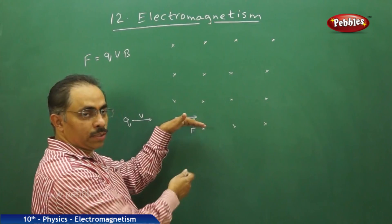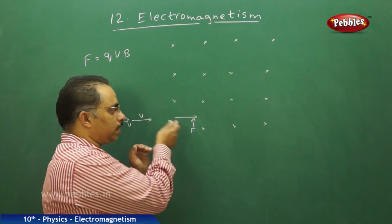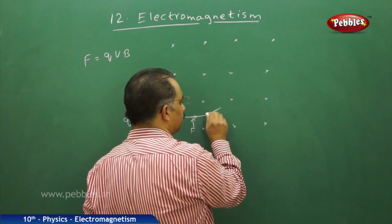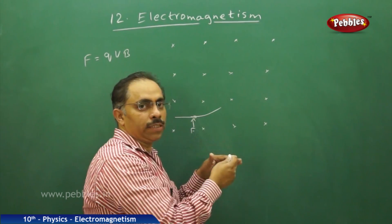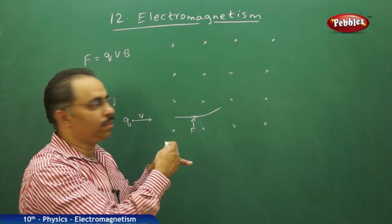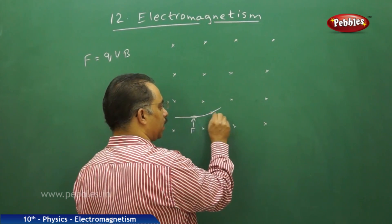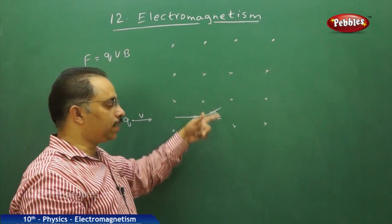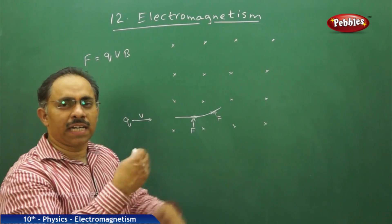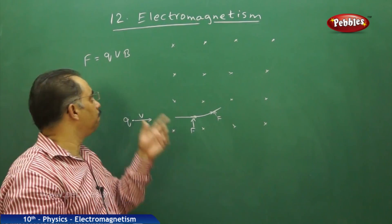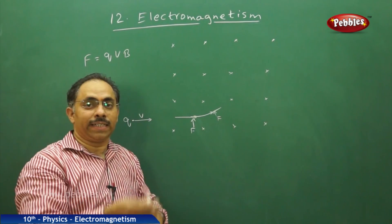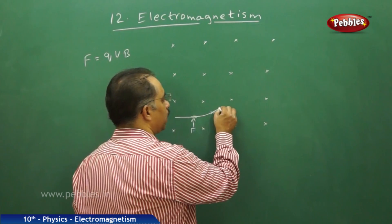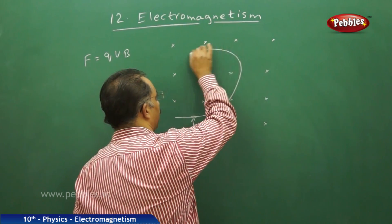When a force is directed perpendicular to the direction of velocity, the particle does not continue in a straight path — it changes its path. Whenever it tries to change direction, the force is always perpendicular to the velocity. So the velocity of the charged particle continuously changes direction, though not magnitude. Because of this continuous change in direction, it will not go in a straight path; it will follow a circular path.